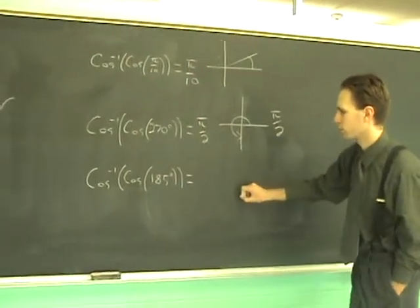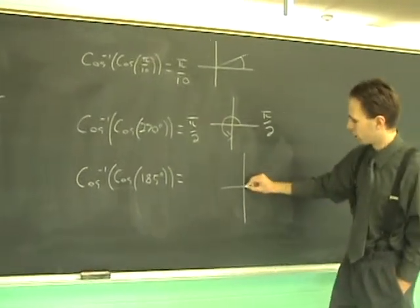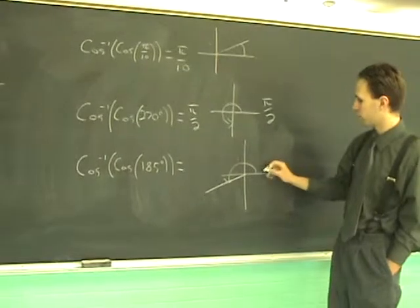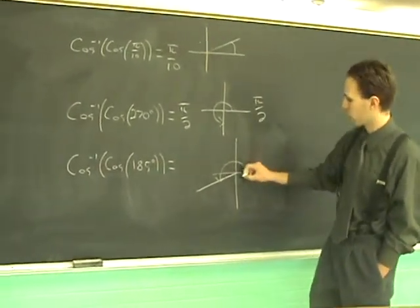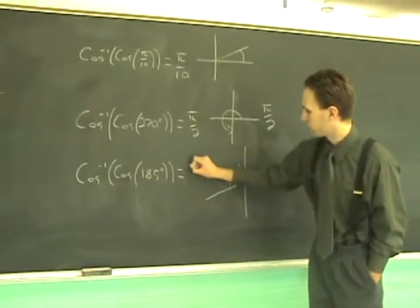And finally, the cosine inverse of cosine of 185. 185 degrees winds up here. So which angle inside this region has the same cosine as that angle? Well, it's going to be this angle here with a reference angle of 5 degrees, 175.